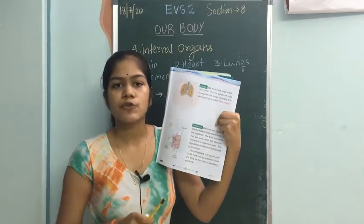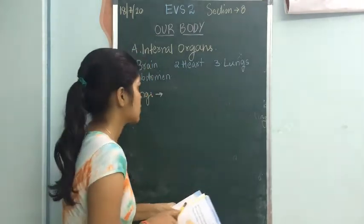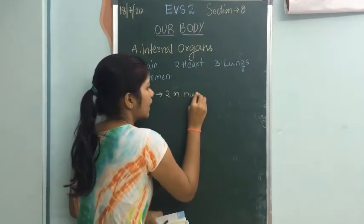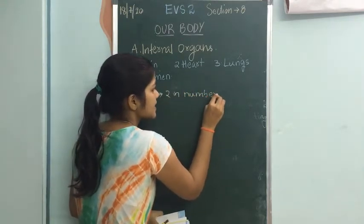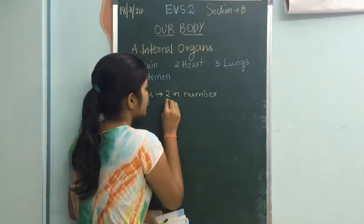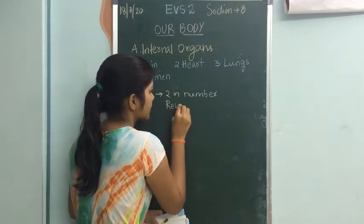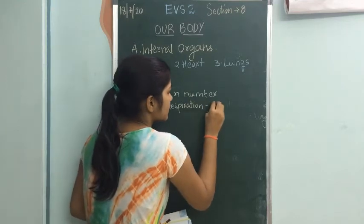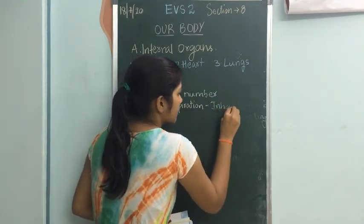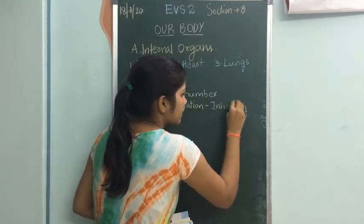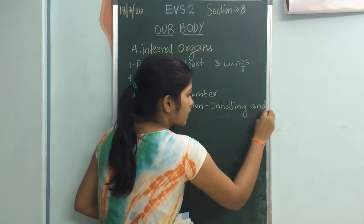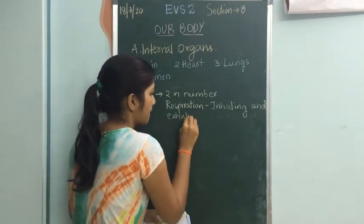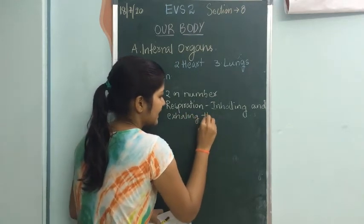So about the lungs: they are two in number, present in the chest, and they are mainly useful for respiration. Respiration means inhaling and exhaling the air.